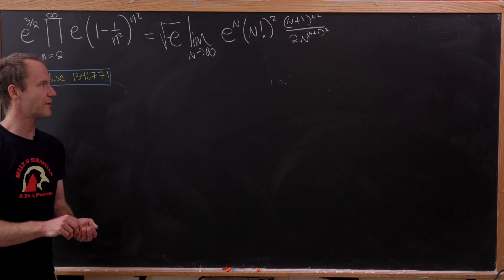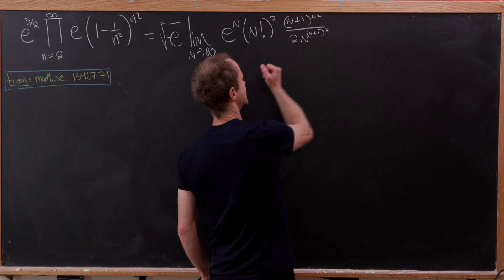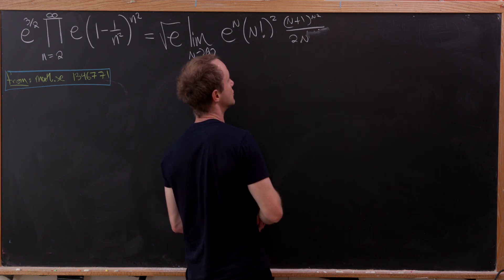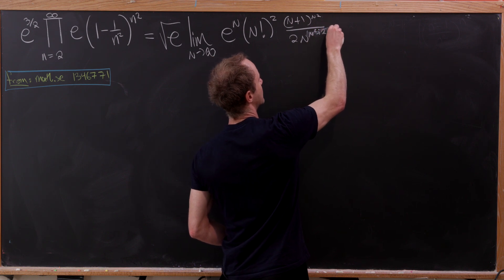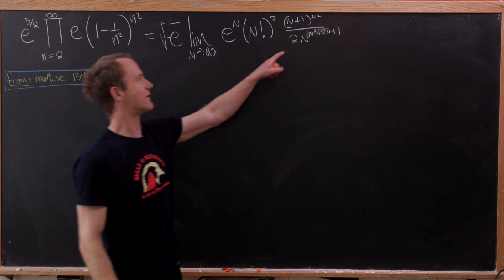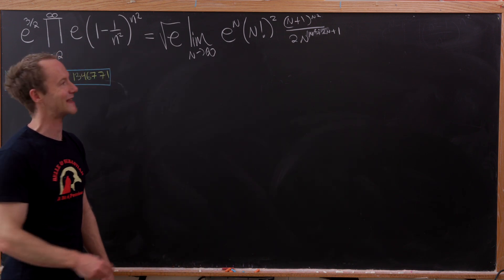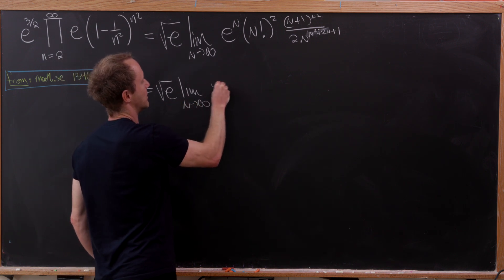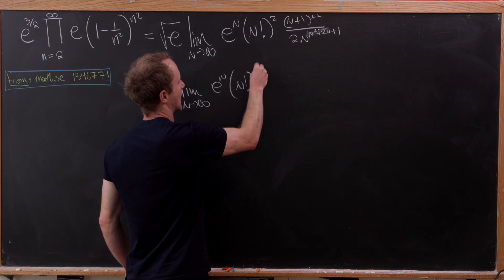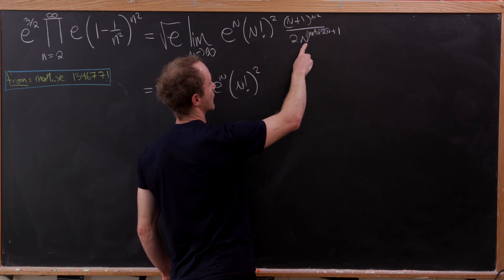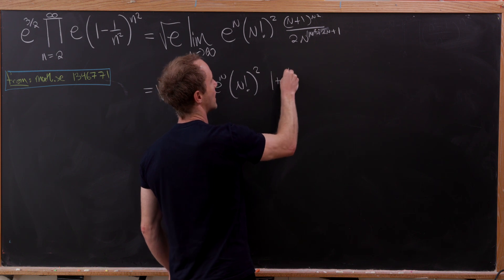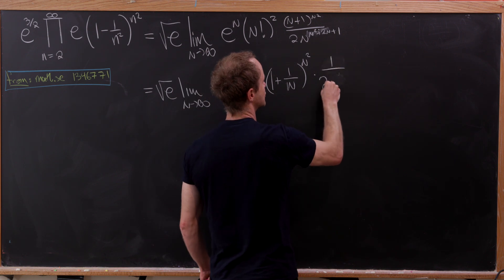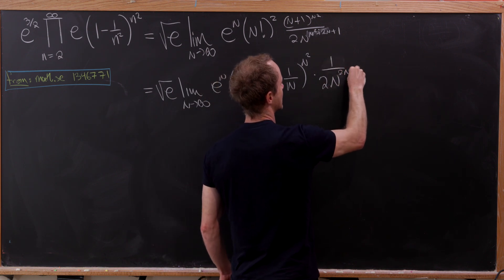So this is where we ended up after rewriting. The first step is to multiply out the n plus 1 squared in the exponent to get n squared plus 2n plus 1. Since we have an exponent of n squared in both numerator and denominator, those combine. Very quickly we can rewrite this so that we have n plus 1 to the n squared over n to the n squared, giving 1 plus 1 over n raised to the n squared, times 1 over 2 times n to the 2n plus 1.